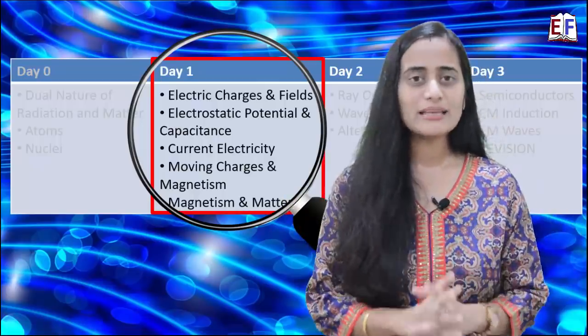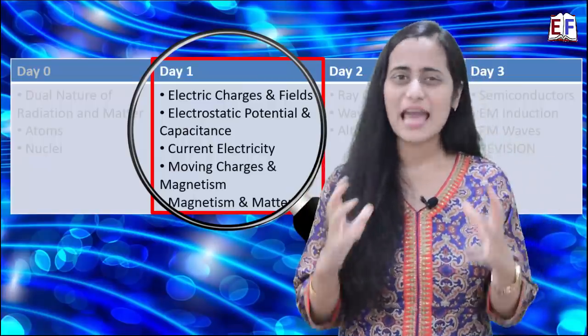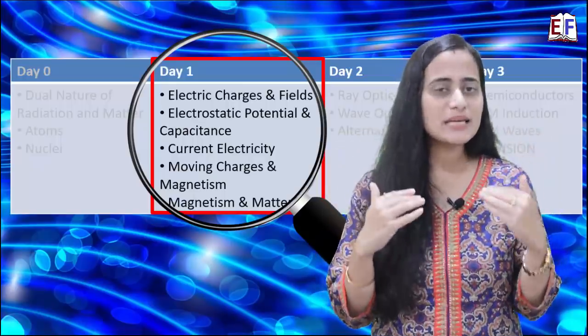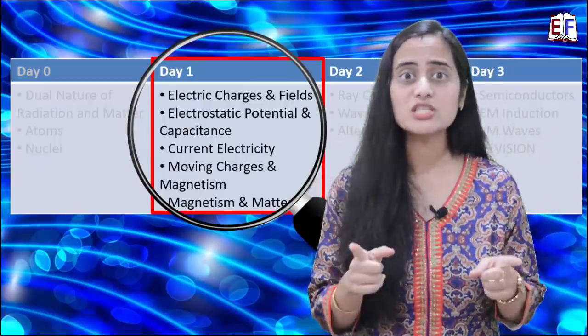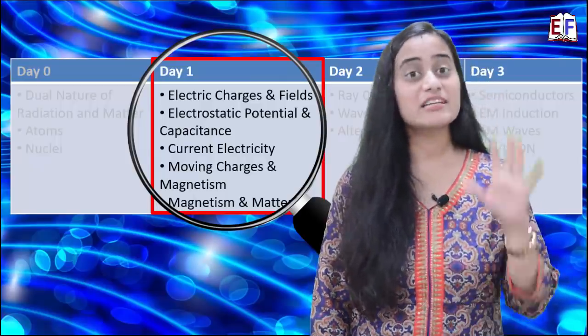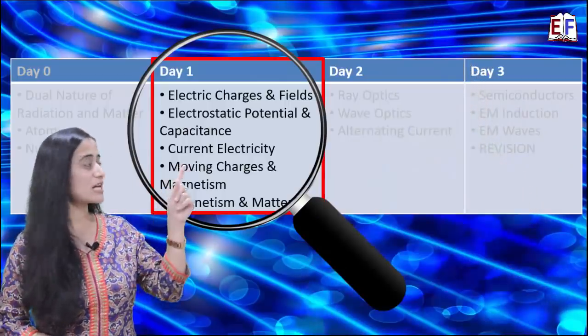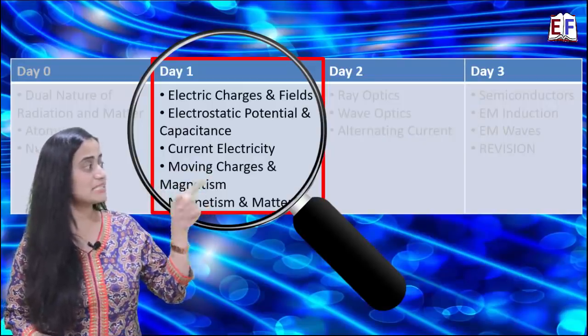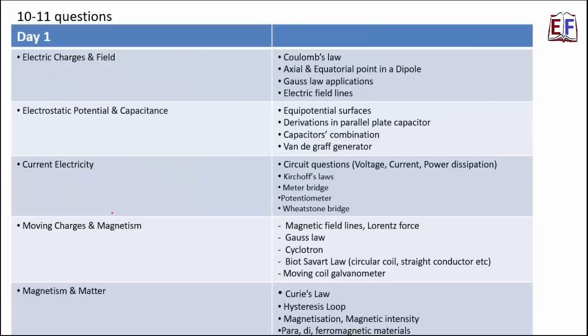Now we have come to day 1. So day 1 is going to be an exhaustive day because this is just the start of our preparation. We are full on energy. Moreover the stress level is very low because now we feel like we have two more days for the exam. So we have a little stress level, energy level high. So we will try to cover more and more today. So today we will cover 5 lessons on day 1. We will cover all of the electricity and magnetism chapters. So we will cover electric charges and fields, electrostatic potential and capacitance, current electricity which is a very important chapter for the exam. Moving charges and magnetism, magnetism and matter. So now these 5 lessons comprise of 10 to 11 questions in your question paper. Now that's a big number. So you have good number of questions from these lessons.